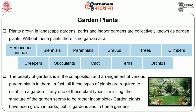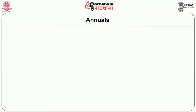The beauty of a garden lies in the composition and arrangement of various garden plants. All these types of plants are required to establish a garden; if any one type is missing, the structure of the garden seems rather incomplete. Garden plants have been grown in parks, public gardens and home gardens.